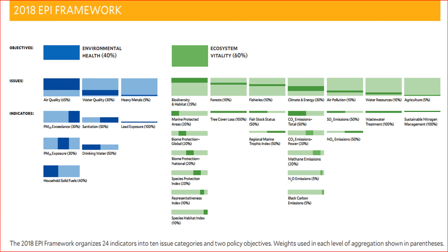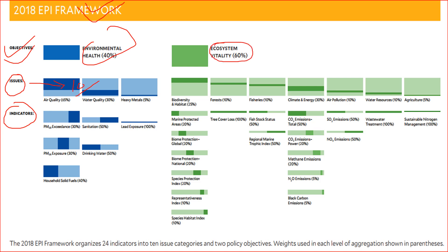This slide shows a quick overview of the previous two slides, with respective indicators and issues belonging to each policy objective. Remember all 10 issue categories and their respective policy objectives. For example, air quality covers maximum weightage under environmental health, while climate and energy has maximum weightage in ecosystem vitality. Under heavy metals, 100% weightage is given to lead exposure — remember all indicators where 100% weightage is given to a single indicator.